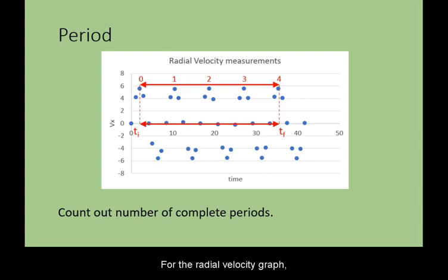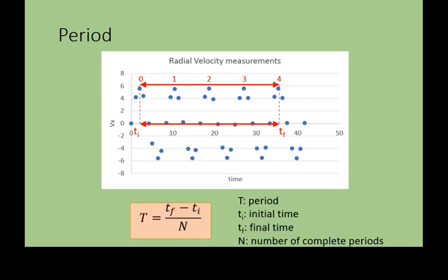For the radial velocity graph, you need to pick an initial time Ti, then count out a number of periods, and then mark the final time Tf. You can then calculate the average period by subtracting the initial time from the final time, and then dividing the difference by the number of complete periods.